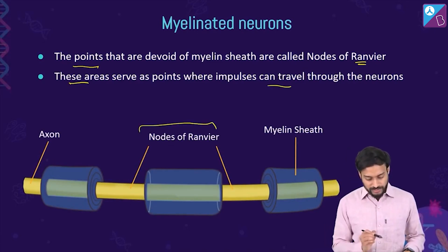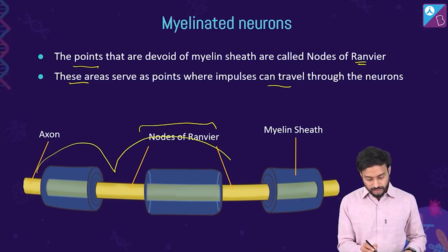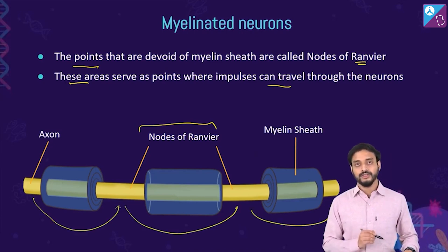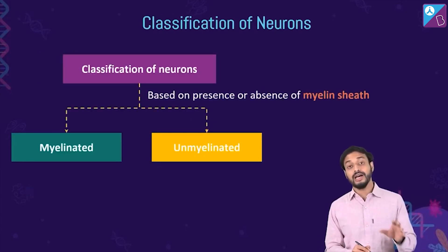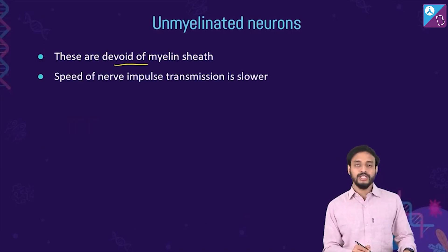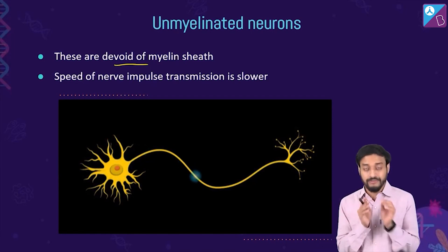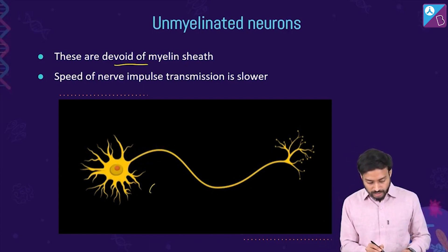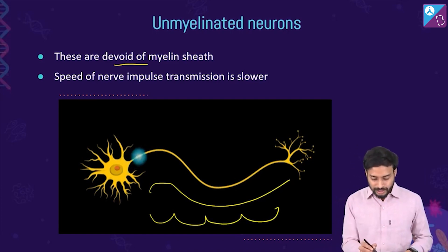Unmyelinated neurons are devoid of myelin sheath, so the speed of nerve impulse transmission is slower. The nerve impulse must travel throughout the entire length of the axon, unlike in myelinated neurons where it jumps across the nodes of Ranvier.